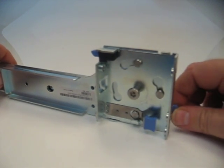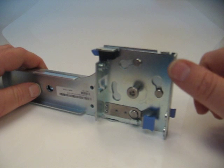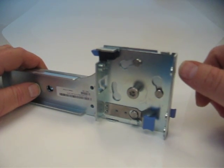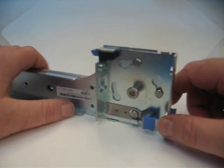This is the Dell 2950 rail kit. It is a universal rail kit. It's able to install into a round hole rack or a square hole rack.